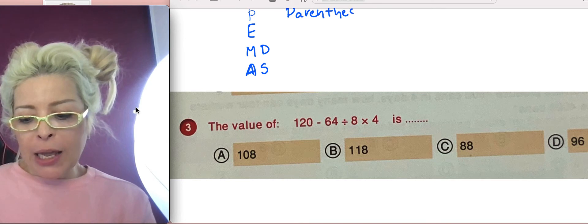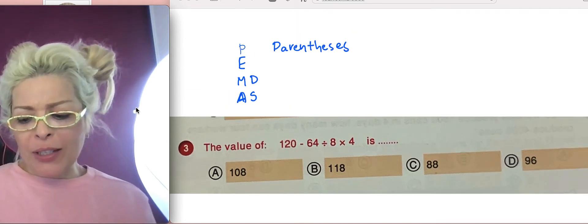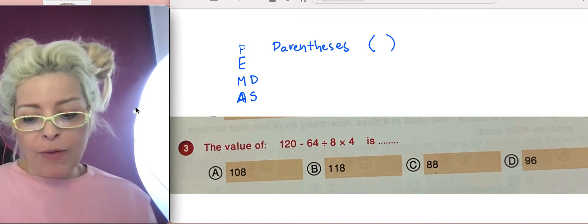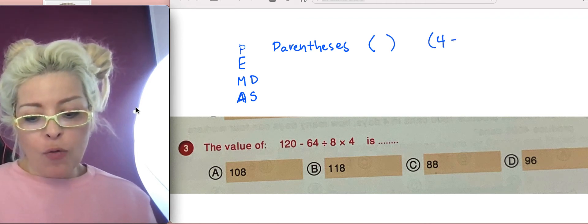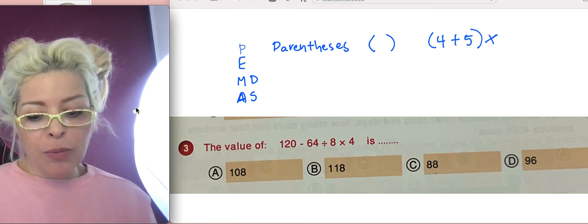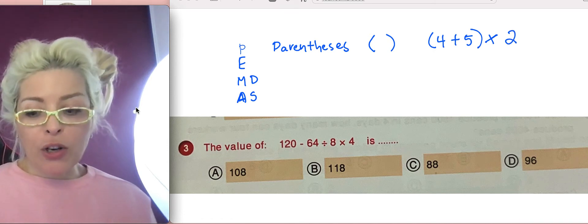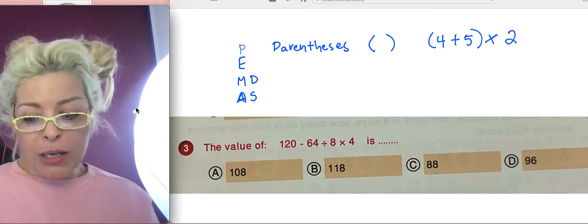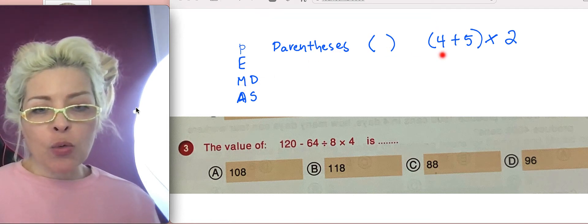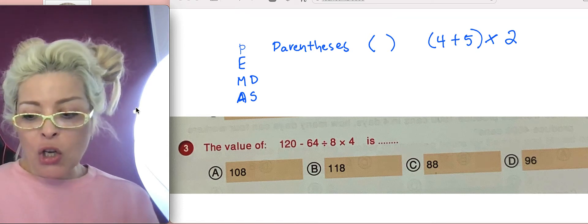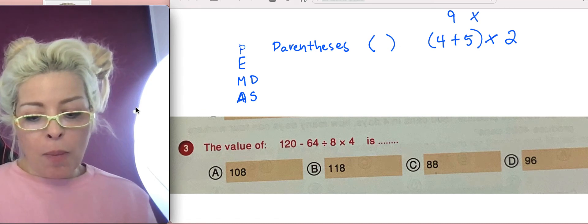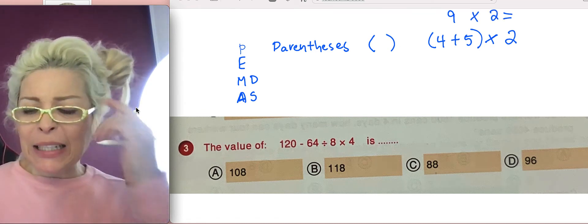P is for parentheses. You might say, well, what does that mean, teacher, parentheses? These are parentheses. So, if you have a problem like this one, 4 plus 5, and then you have multiplication on the outside, guess which one you're going to do first. Because parentheses comes before multiplication and division, you're going to do what's in the parentheses first. So 4 plus 5 is 9. Multiply by 2 will give you 18.